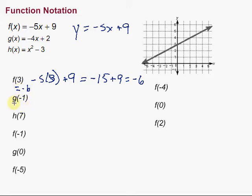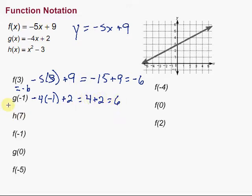Let's try the next one. It says g of negative 1 — that means we're talking about the g function. So we're going to put negative 1 in for x: negative 4 times negative 1 plus 2. Following order of operations, negative 4 times negative 1 is 4, and 4 plus 2 is 6. So g of negative 1 equals 6.